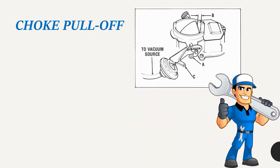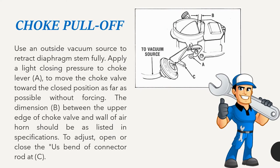Choke pull off: Use an outside vacuum source to retract diaphragm stem fully. Apply a light closing pressure to choke lever A to move the choke valve toward the closed position as far as possible without forcing. The dimension B between the upper edge of choke valve and wall of air horn should be as listed in specifications. To adjust, open or close the S-bend of connector rod at C.